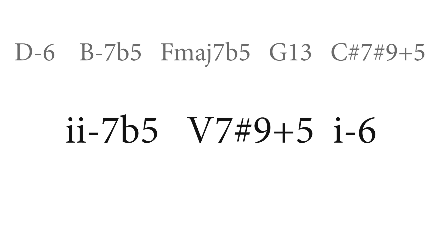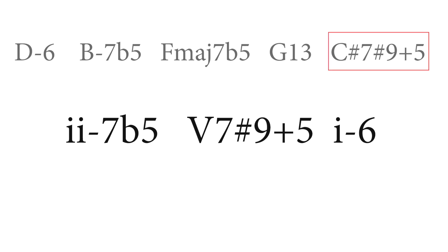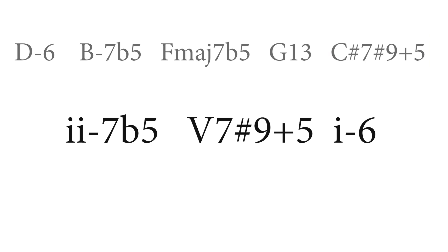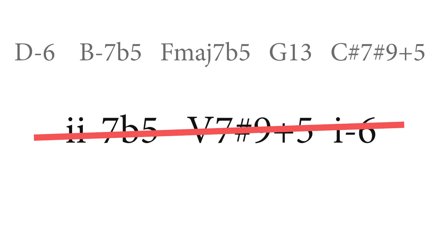However, the chord progression we are left with — B minor 7 flat 5, C sharp 7 to D minor 6 — is not a minor 2-5-1 in any key.